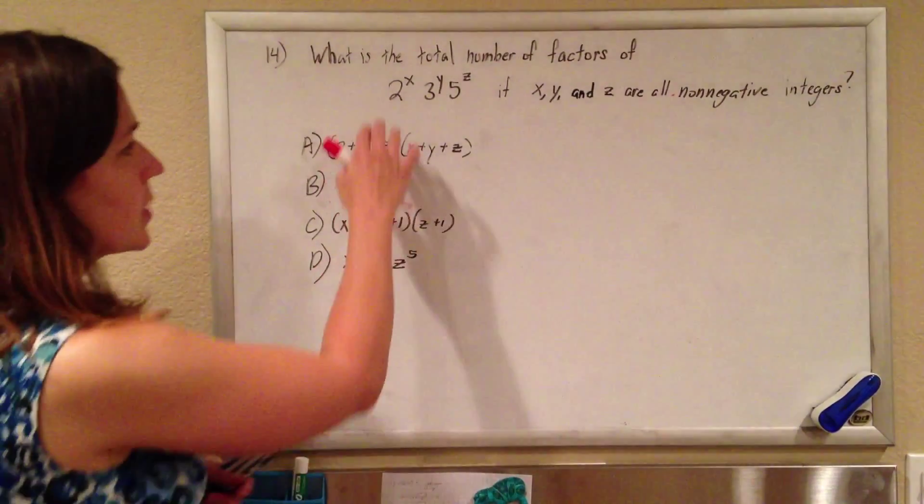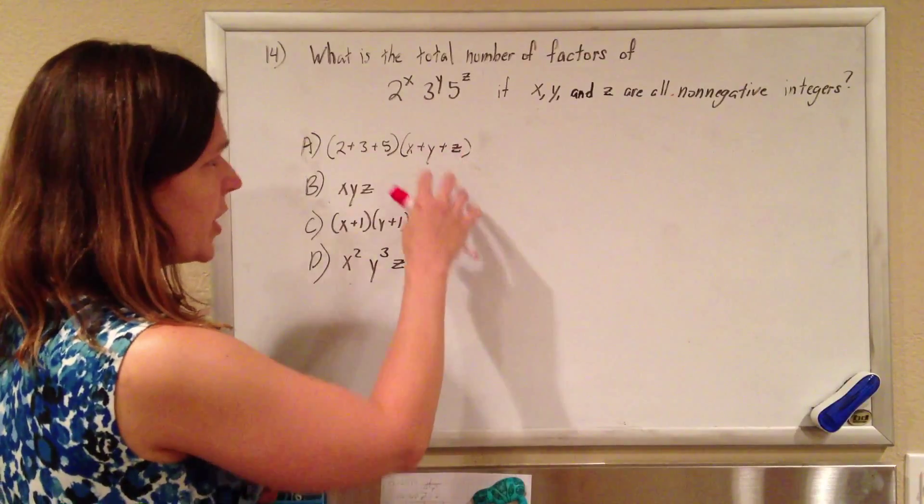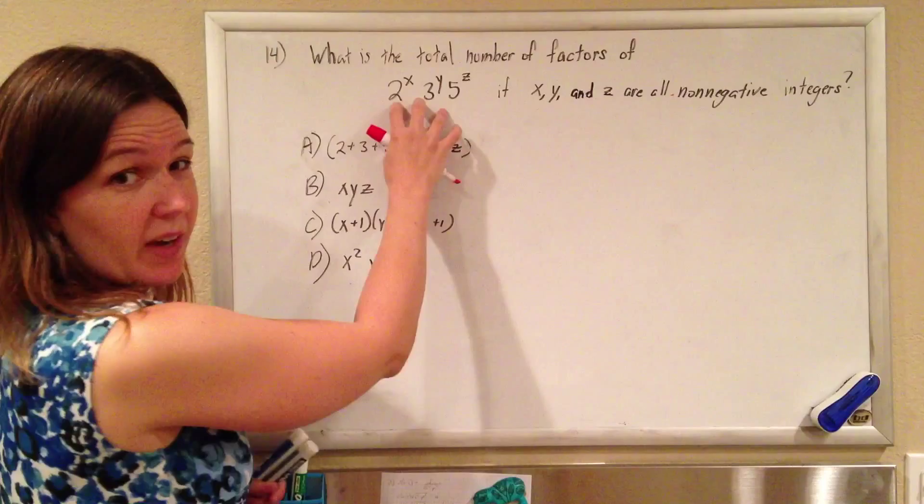Okay, so we have this number written out in its prime factorization form, and when we're looking for factors of it, we're looking for things we can divide it by.